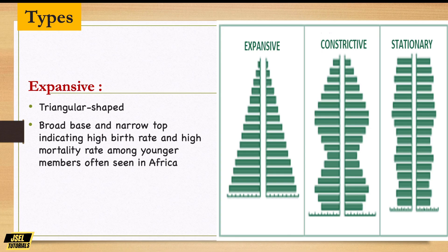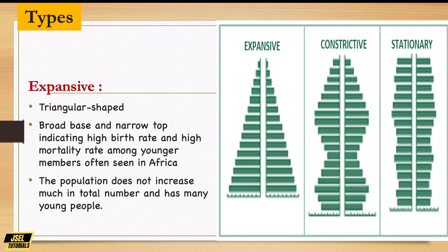The base is very broad and the top is very narrow. The fertility rate in this part of the world is very high, but the life expectancy is very low, so people tend to die at a young age. You can see that happening in the expansive pyramid.